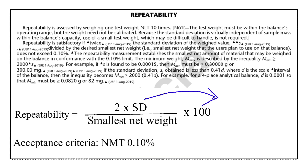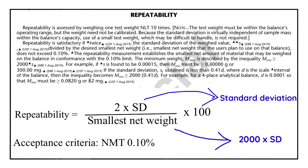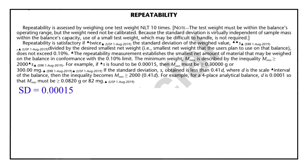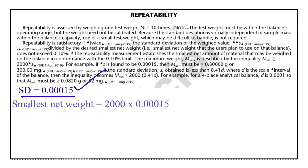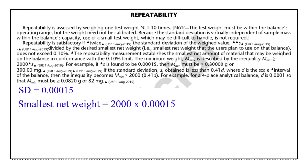In this formula, SD means standard deviation; this value can be taken from the weight print, and modern day balances automatically calculate the standard deviation value. Now comes the smallest net weight — this is calculated by the formula: smallest net weight = 2000 × standard deviation. Suppose standard deviation equals 0.00015, then the smallest net weight will be equal to 2000 × 0.00015, which equals 0.3 gram or 300 milligram.